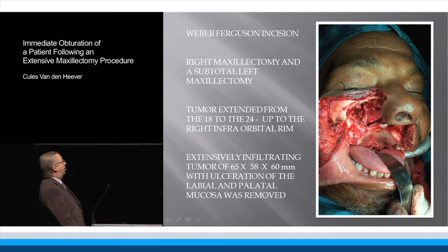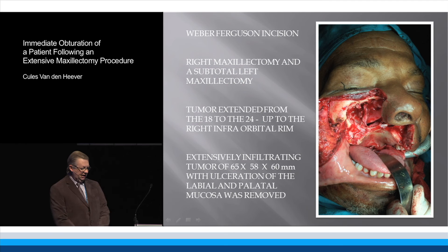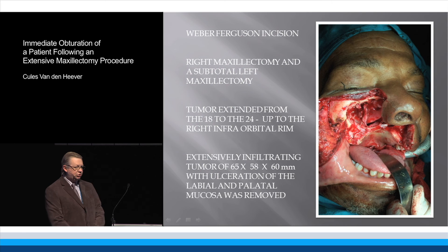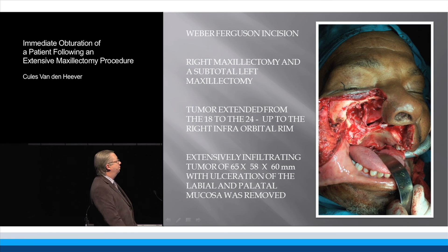During surgery, a right maxillectomy and left subtotal maxillectomy was performed using a Weber-Ferguson incision. It can be seen there that the tumour extended from the 1-8 area up to the 2-4 area. Fortunately, it did not infiltrate into the infraorbital rim, and you can see there the infraorbital rim is still intact with the infraorbital nerve just below it.